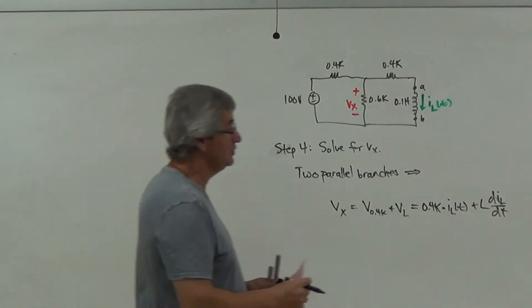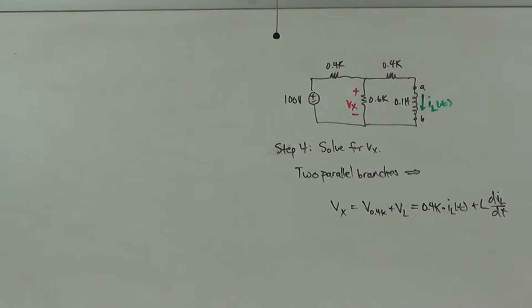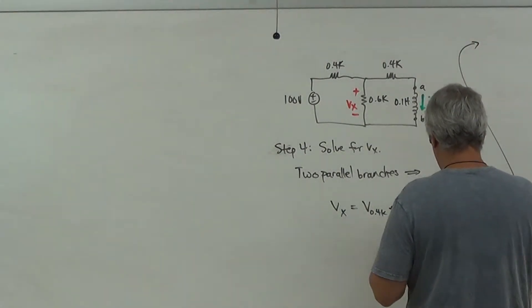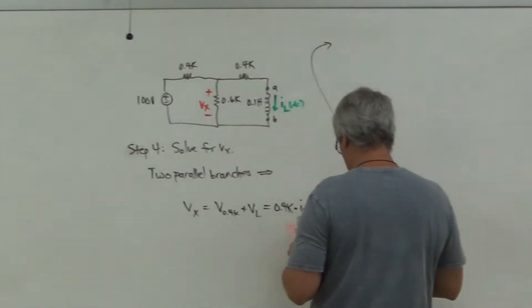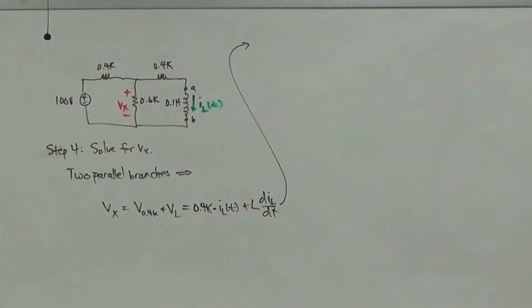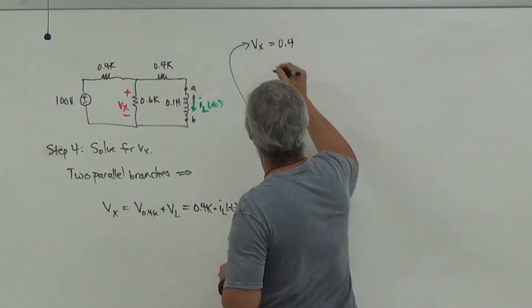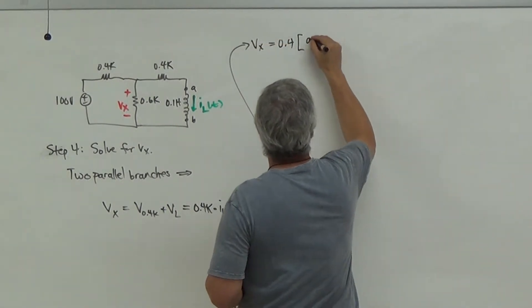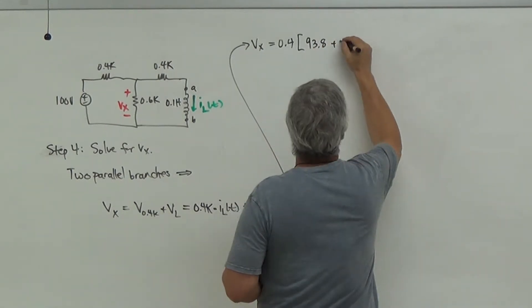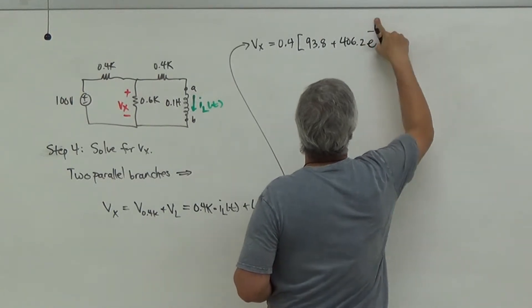So let's write this out there. So what you're seeing here is that, remember, even though I didn't write it here, shame on me. I should have had milliamps here. So look that that milli is going to kill with that K right there. So what I'm going to get here then, if I look at this guy, in the end, let me make sure I don't screw this value up. Let's see, where do I write this at? It's got to be like this. So I'm going to get 0.4, right? So V of X is going to be 0.4 times the quantity, 93.8 plus 406.2 e to the minus 6400.